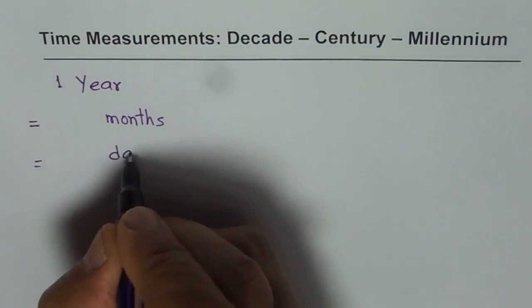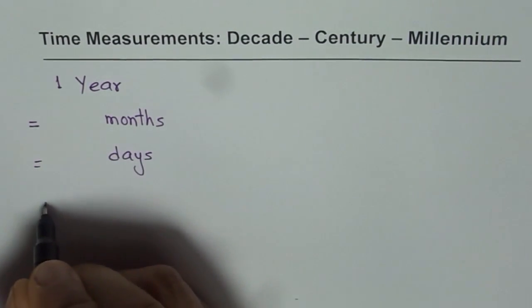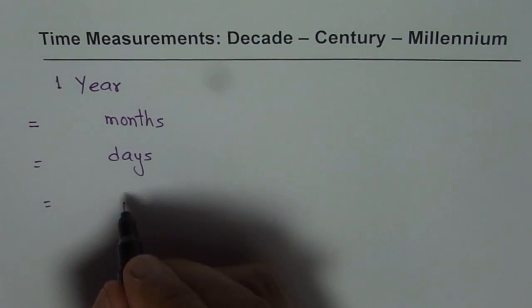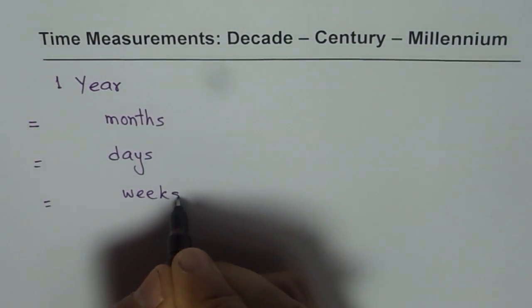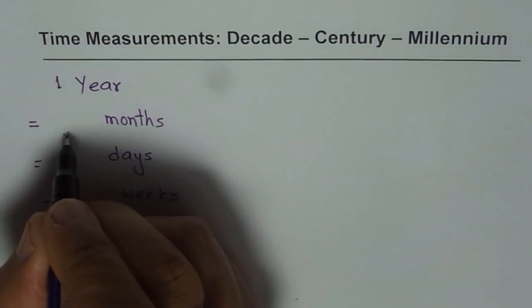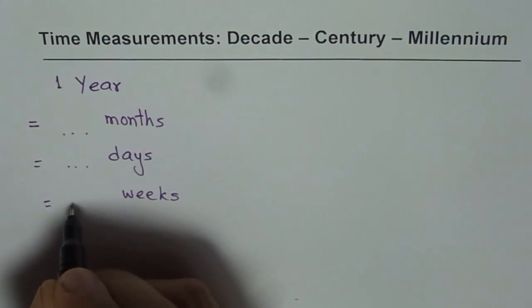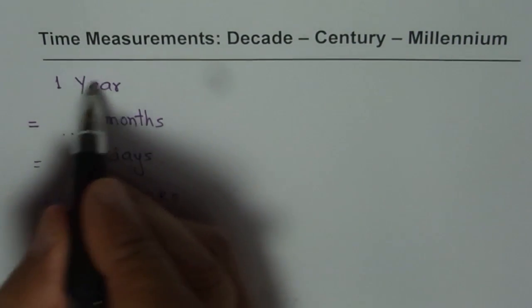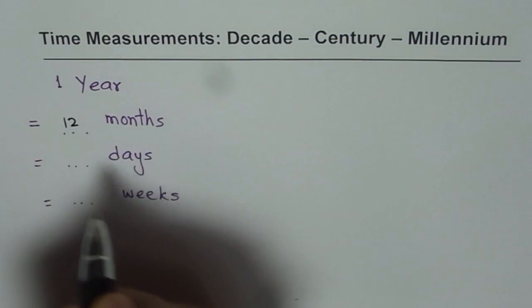How many days? One year has how many days? 365 days. Now how about weeks? Do you know that part? Well I find that many students do not know how many weeks are there in one year. Let's write it down. One year has 12 months,